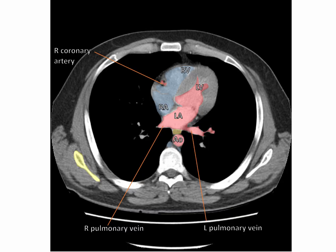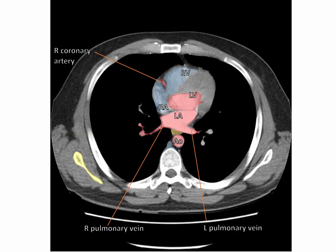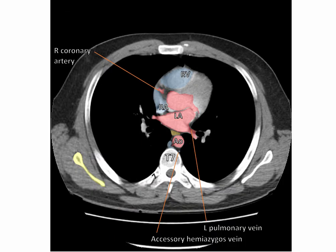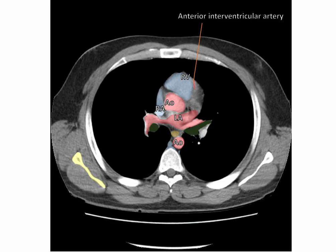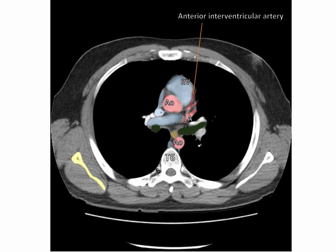We can also see some of the axio-appendicular muscles at this level. Here is the trapezius, here is rhomboid major, here we have serratus anterior, and here latissimus dorsi. Highlighted in green, we have some of the rotator cuff muscles. We are now at the so-called high cardiac level. The small vein on the left is the accessory hemiazygous. We are now beginning to see the right and left main bronchi, highlighted in green. The left ventricle has narrowed to form the aorta, and branching from it we can see the right coronary artery. We are also beginning to see the profile of the anterior interventricular artery, also known as the left anterior descending artery, running in the interventricular sulcus, and now we can see its branches from the left coronary artery with the circumflex artery.